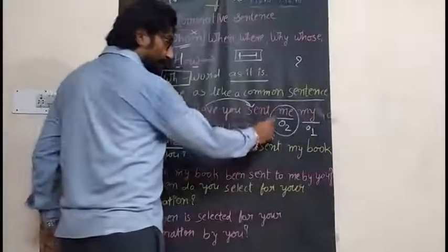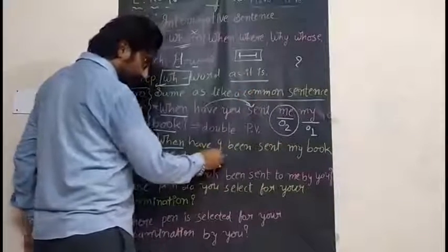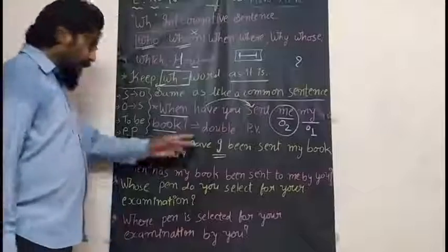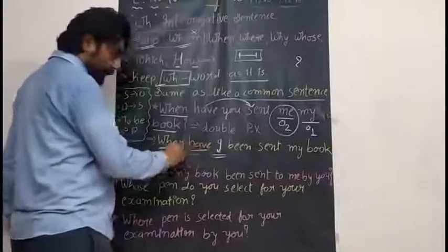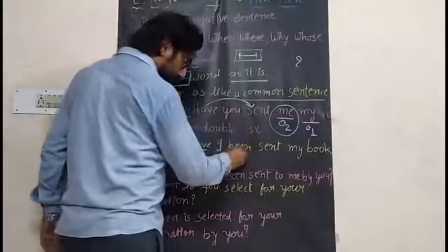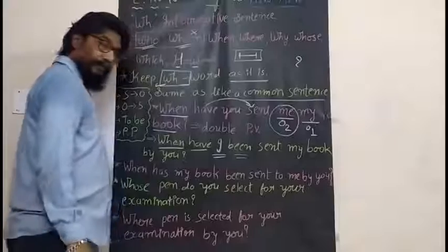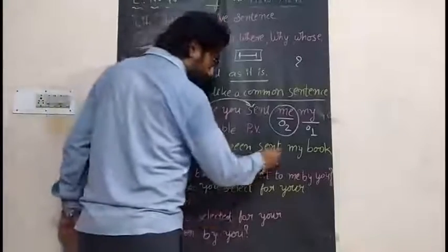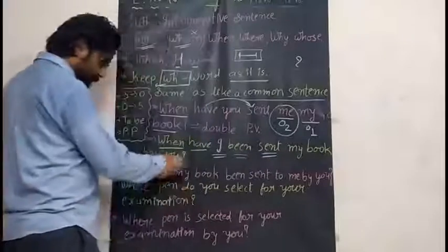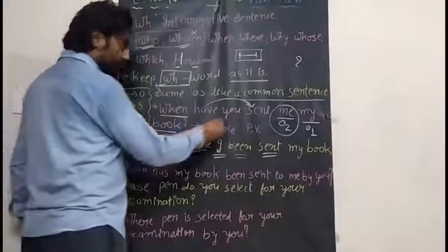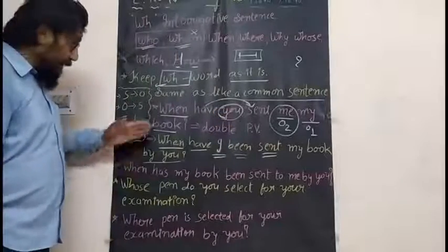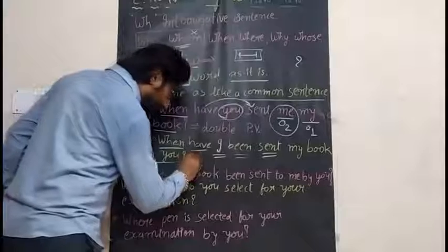The given object is OC, which should be converted into NC. So I have written 'I' — the objective case 'me' becomes the nominative case 'I'. With 'I', what auxiliary should I use? HAVE. So: WHEN HAVE I — then the BP form of the verb — followed by MY BOOK, BY YOU, because 'you' is the subject. In this way, I have completed the first passive.